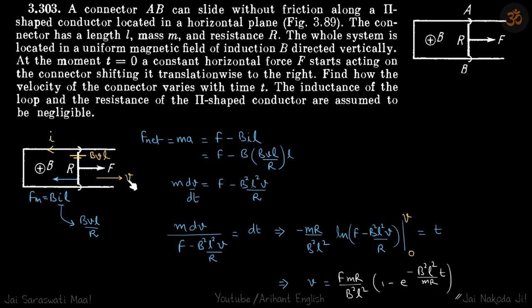Let's say at any time T, its velocity is V. The EMF induced in the rod is BVL. So current in the circuit is BVL by R.